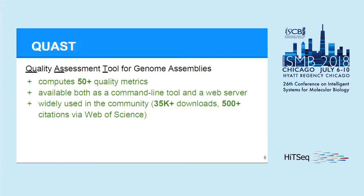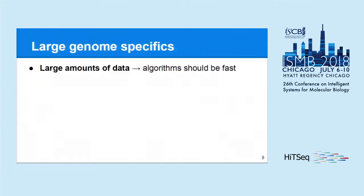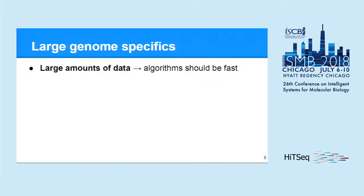QUAST has a very important limitation: it was designed for bacterial assemblies and cannot handle large genomes. So what are the features of large genomes that should be considered in a new evaluation tool? First of all, it's the size of such assemblies — they are huge — so algorithms should be fast and memory efficient.